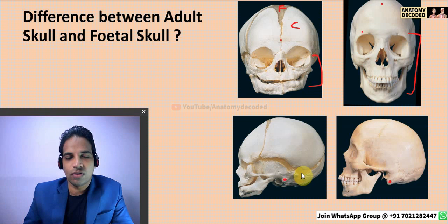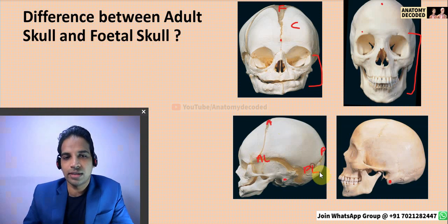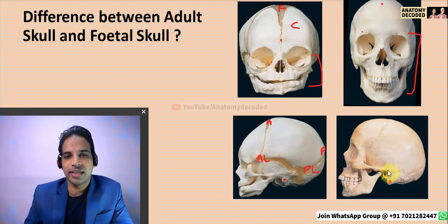There are six fontanels: one anterior fontanel, one posterior fontanel, and anterolateral and posterolateral fontanels on each side. All these fontanels will be fused in an adult skull.